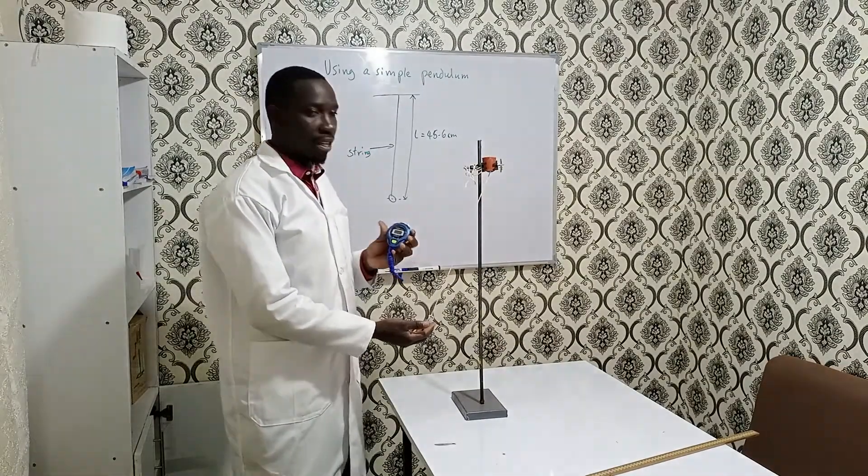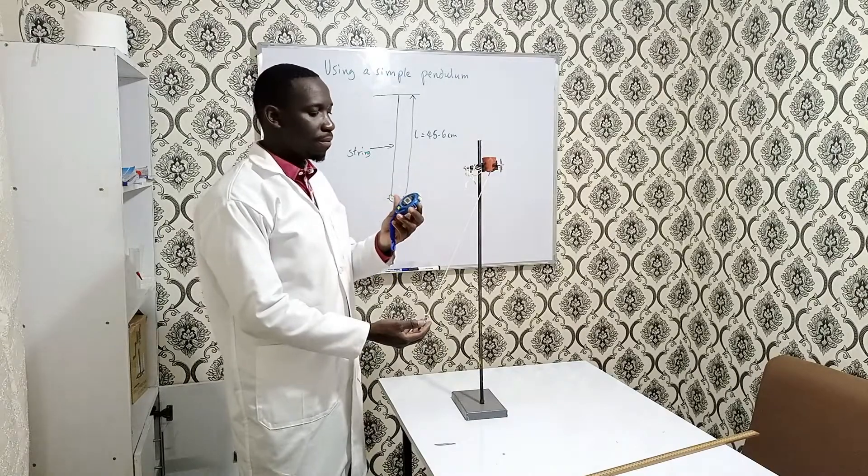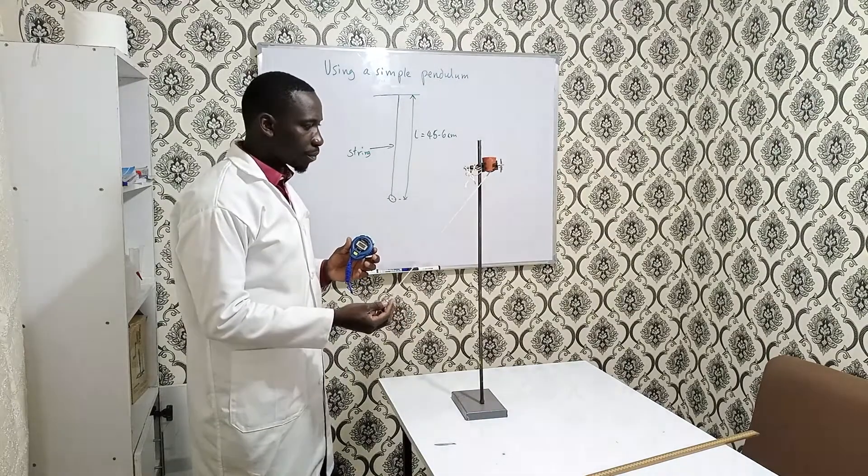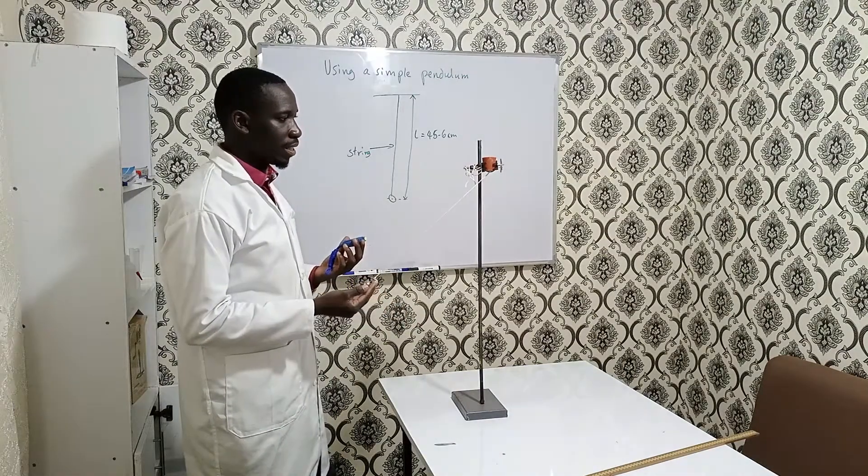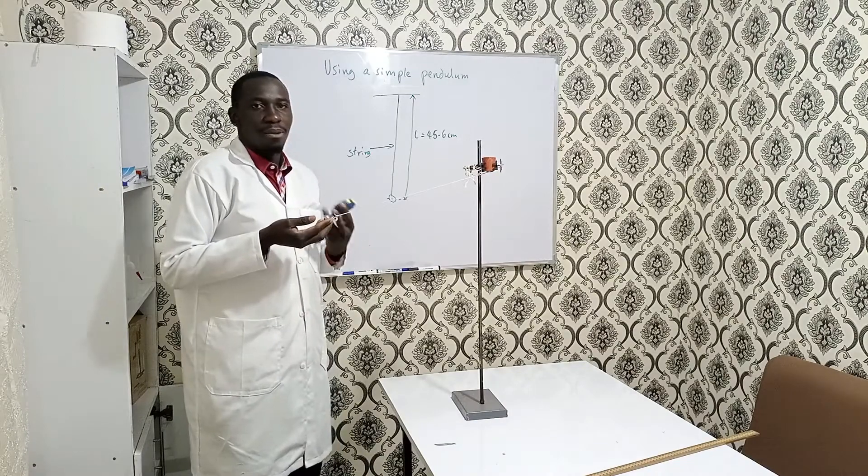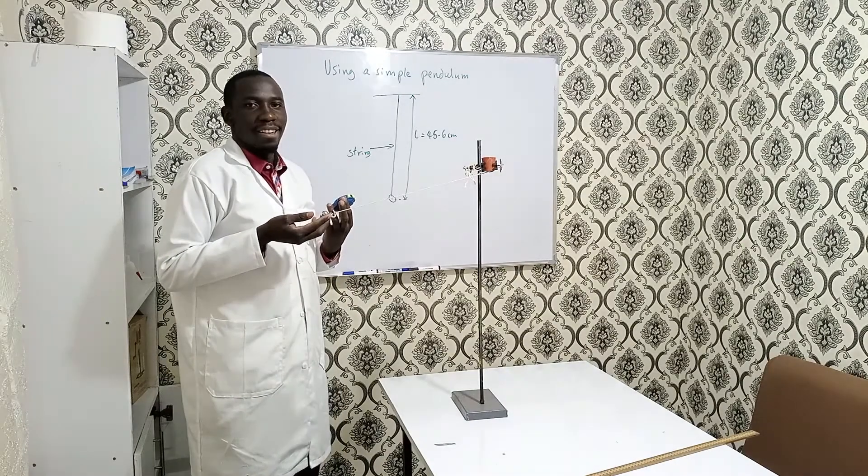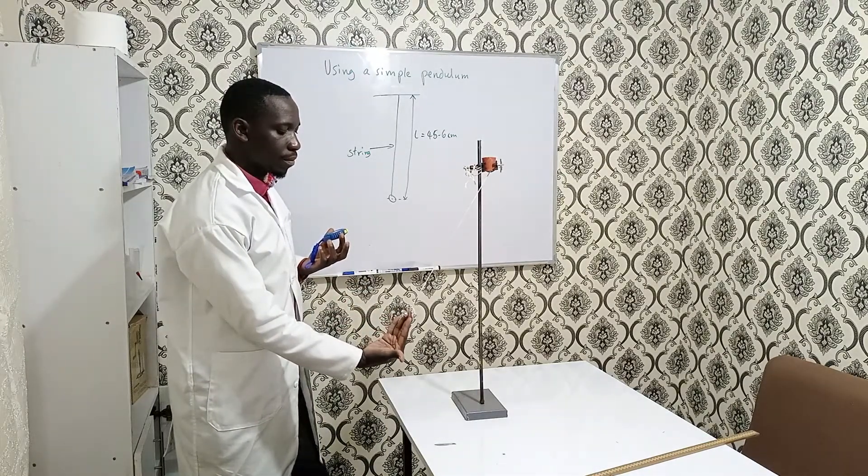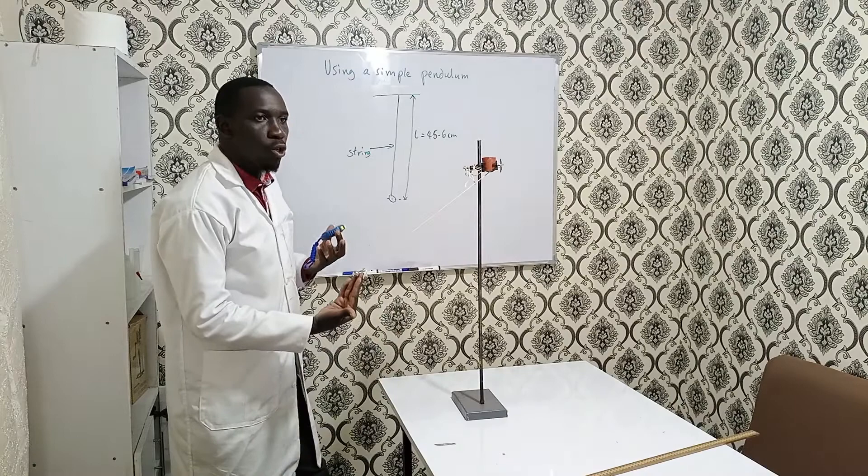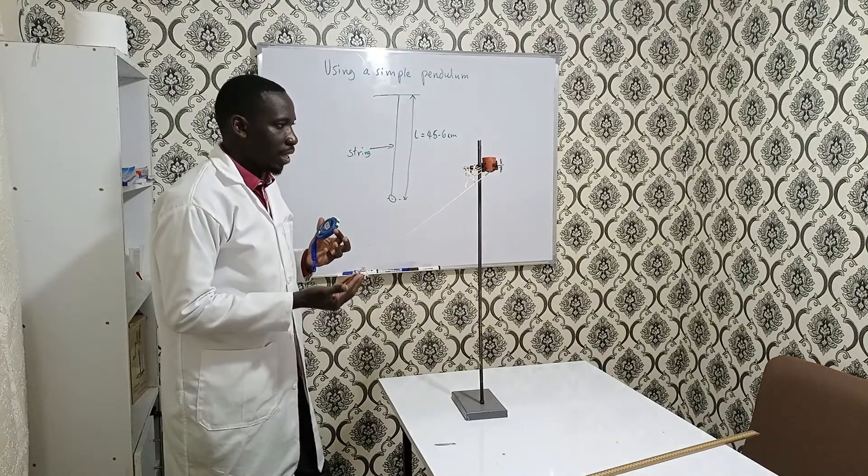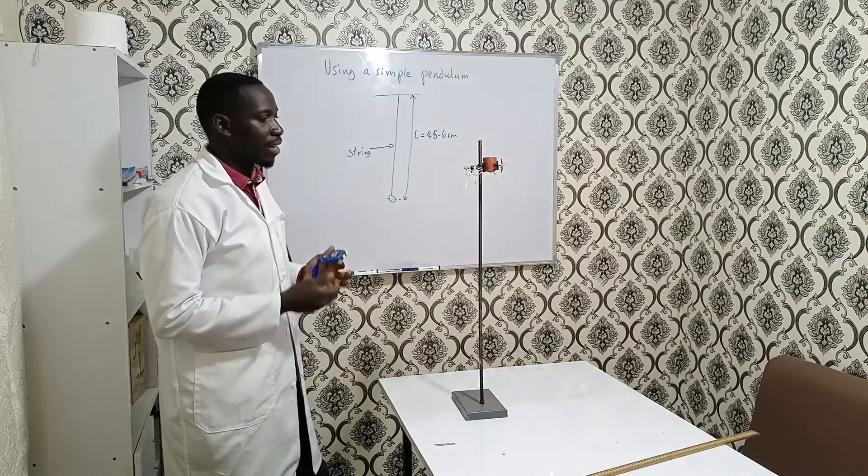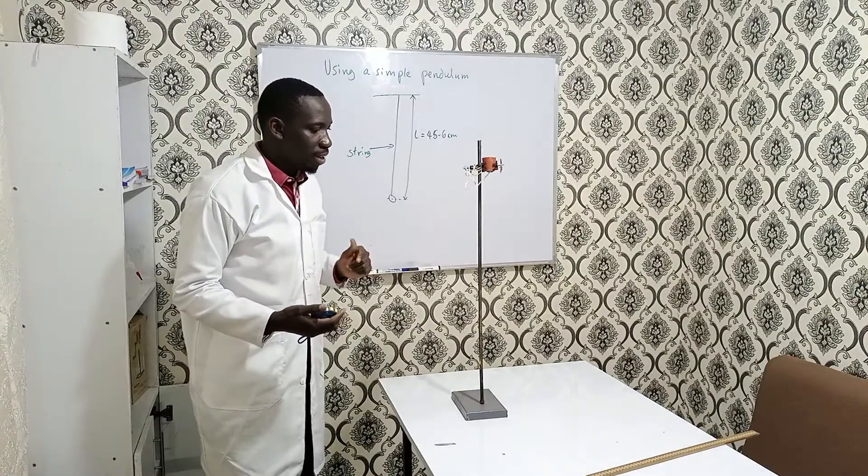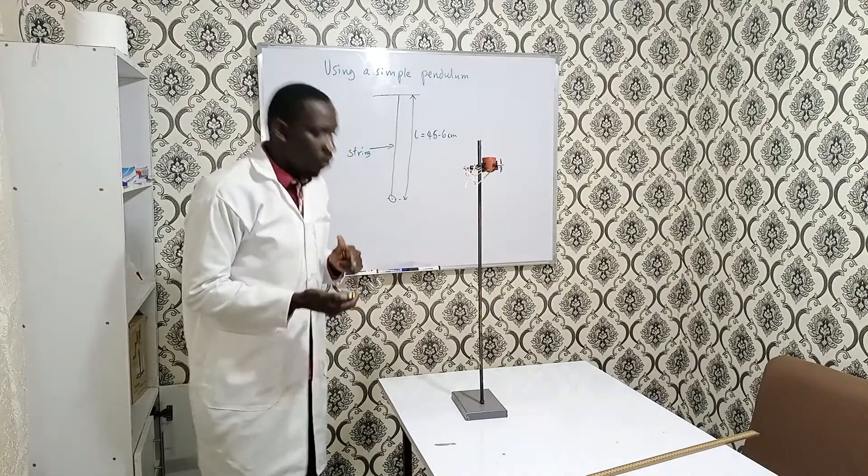My time is at zero. I have made a full video on how to use a stopwatch, so kindly check that. How do I do it? I don't need to release the bob from here. Just a slight displacement. Look at the way I'm holding it. I'm just going to release it, not drop it.